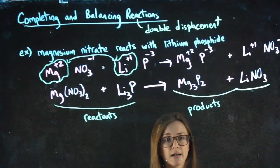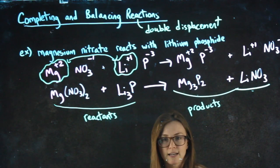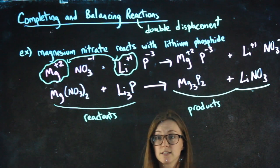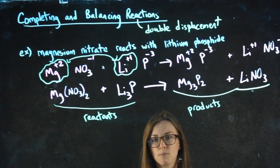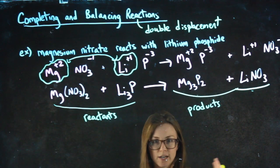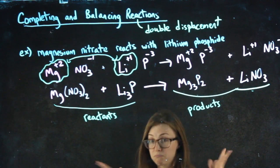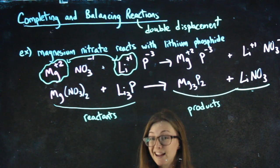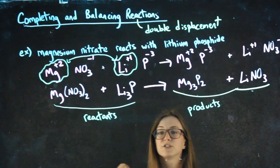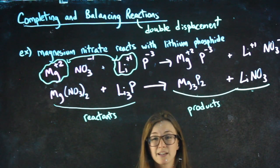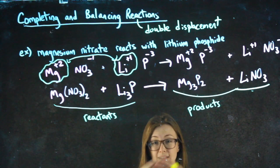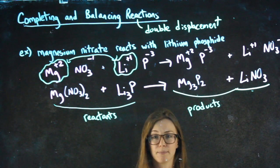I still need to balance it. The idea behind balancing is that we can't just create an atom of magnesium or an atom of phosphorus. We can't just create them out of nowhere and they can't disappear out of anywhere. So this idea of balancing is making sure, did we account for all of the atoms we needed for this reaction to happen?